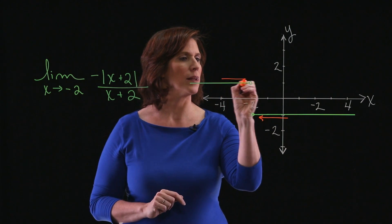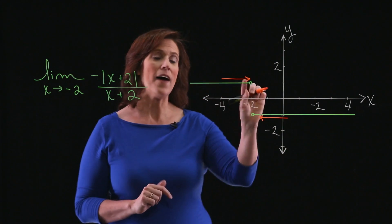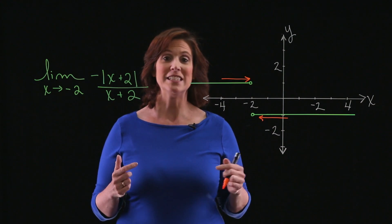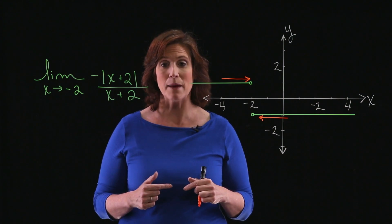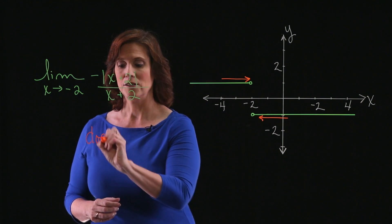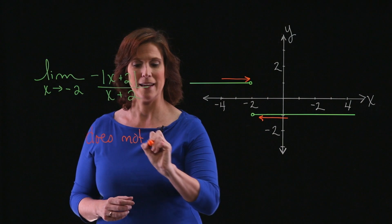But as I approach from the left-hand side, the values are getting closer and closer to a positive 1. Because I'm approaching different values depending on which side I'm coming from, the limit does not exist. So does not exist.